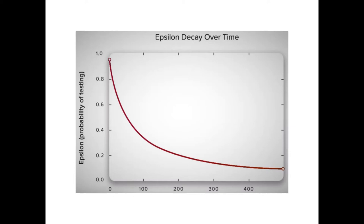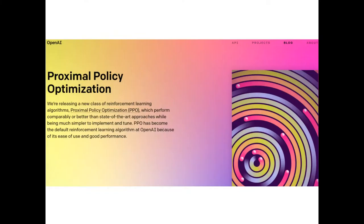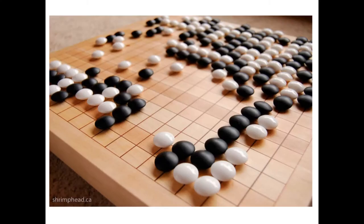Usually epsilon decreases over training time, but it turns out that there exist alternative algorithms which perform better. The current state-of-the-art in Deep RL optimization is Proximal Policy Optimization, also known as PPO. It's now the de facto standard, which has been used by OpenAI Five defeating the Dota 2 champions.